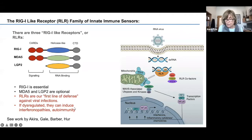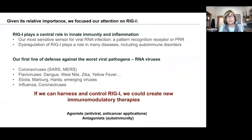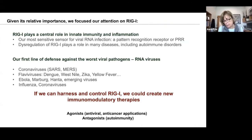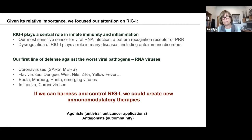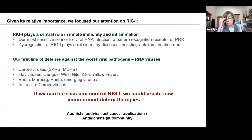RIG-I receptors are wonderful and really very important in our biology, but if they become hyperactivated, they stimulate a number of interferonopathies and can lead to autoimmunity. We have focused most of our attention on the RIG-I receptor. It plays a really central role — it is your most important antiviral receptor, actually an essential gene, whereas the others are not. It's your first defender against coronavirus, flavivirus, filovirus, or influenza virus infection. It's necessary to activate it in order to have the secondary adaptive response kick in, so if you can harness and control RIG-I, you can create a variety of new immunomodulatory therapies.